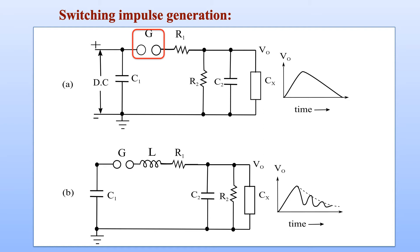Once the capacitor is charged, the spark gap G can be triggered at a desired instant so that the capacitor discharges across the test object through a wave shaping circuit consisting of resistors R1 and R2, and produces an impulse voltage, a switching impulse voltage of desired wave shape.